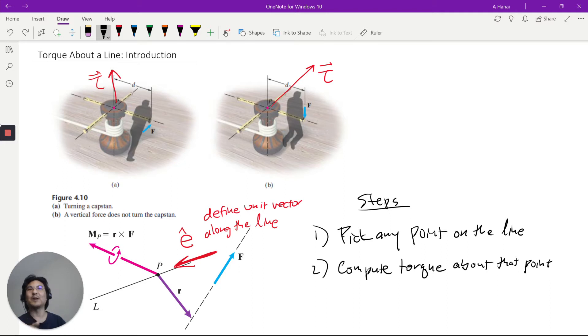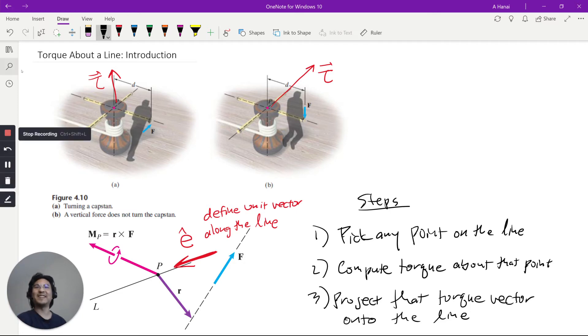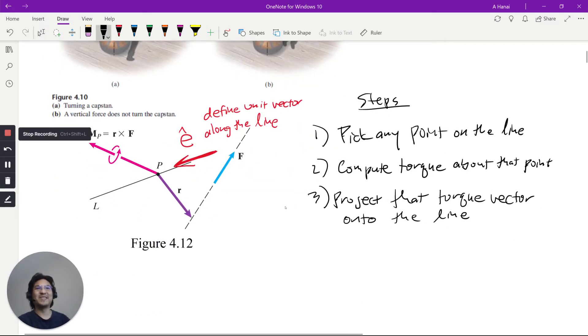But if we want the torque about the line, you project that torque vector onto the line. You project it onto the line. So if you recall, how do you find the component of a vector along a line, if that sounds familiar. It's torque along the line. It's E dot that vector, that torque vector about that point.